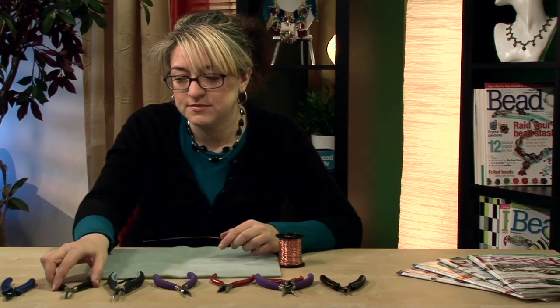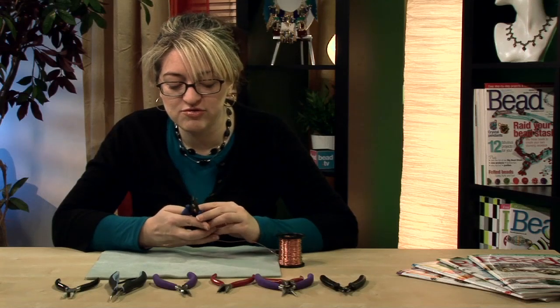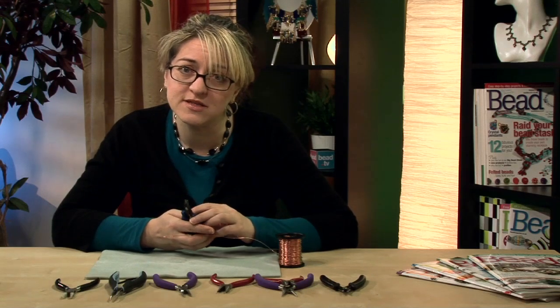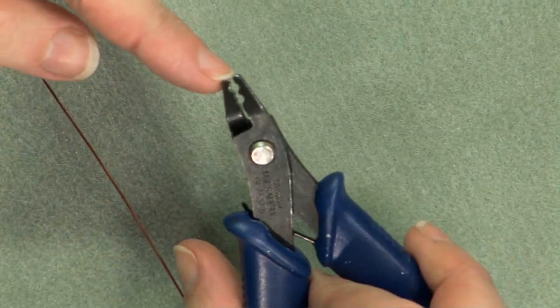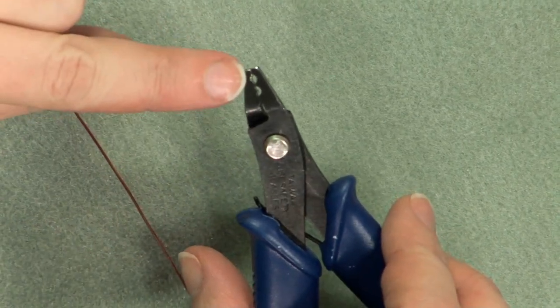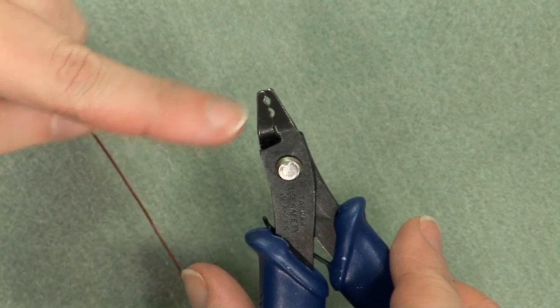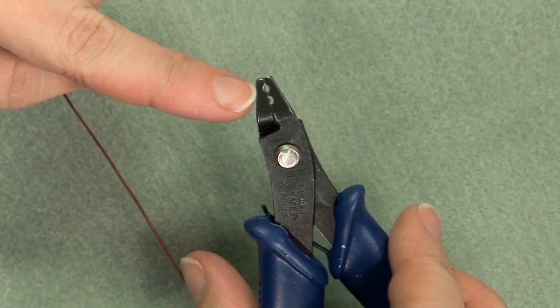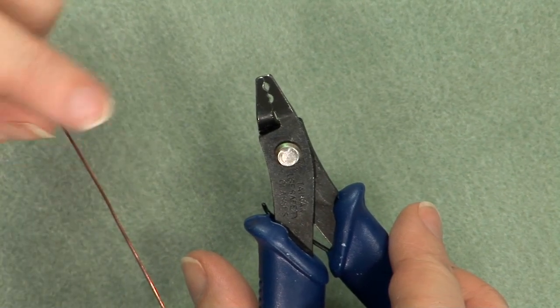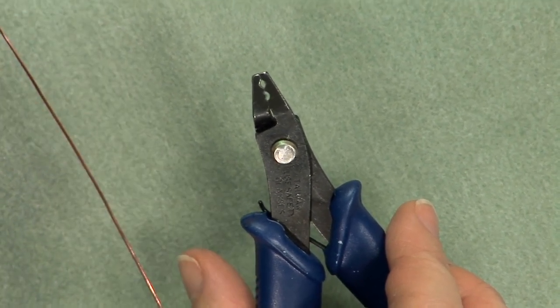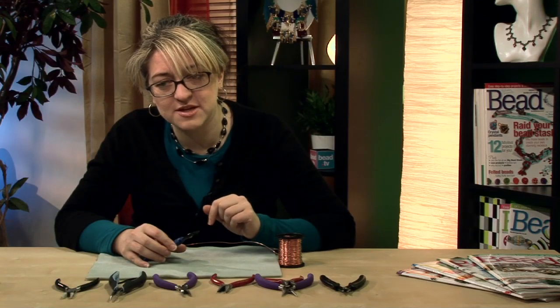Next pliers which you might find useful are crimping pliers. These are mainly used in stringing for squashing crimp beads but they're perfect for if you're doing a wrapped loop. If you look at their jaws you can see they have two notches. One that's nearest the handle is sort of a u-shape, one towards the end is more rounded. When you're making a wrapped loop you can take advantage and use that rounded notch and just neaten off the end of your wire. If you watch our wrapped loops film you'll see us actually using that in there. But so once you start doing wire work you might want to invest in a pair of these.